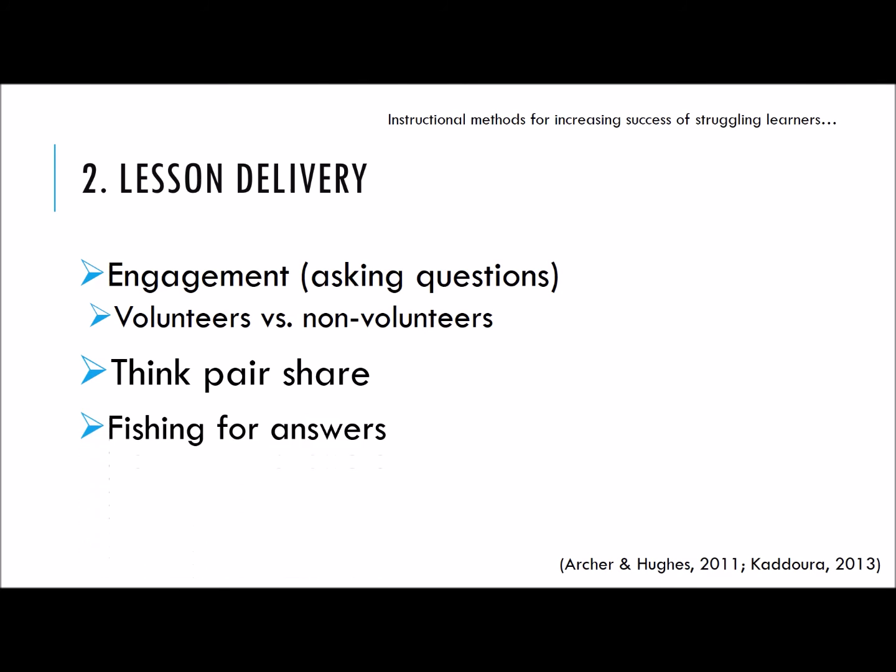Fishing for answers occurs when several students provide an incorrect answer and the teacher fishes around for the correct one. If we repeat an incorrect answer too many times, processing the correct answer can become more difficult for the struggling learner. For this reason, it is best to limit fishing and instead prompt or support an incorrect student in determining the correct procedure or answer.